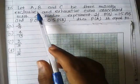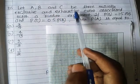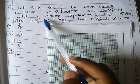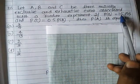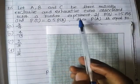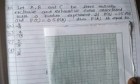Question number 105: Let A, B, and C be three mutually exclusive and exhaustive events with a random experiment. If P(B) is equal to 1.5 P(A) and P(C) is equal to 0.5 P(B), then what is P(A)? Probability of A is equal to...